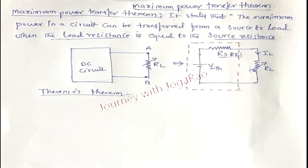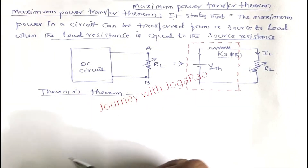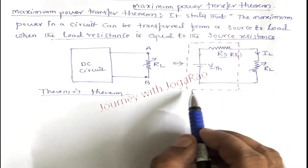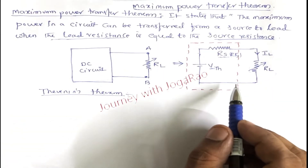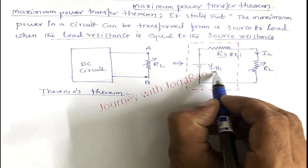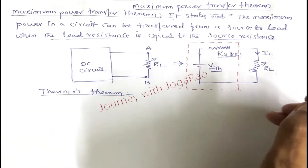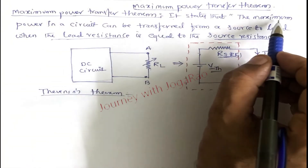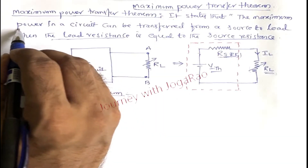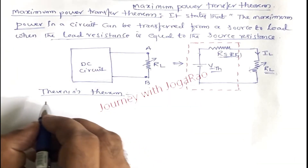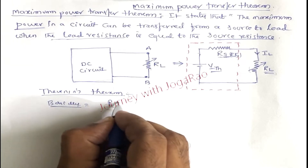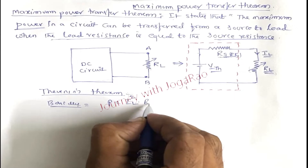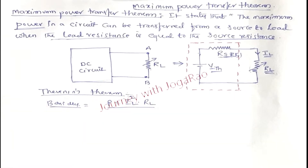The Thevenin circuit is the basis of the Maximum Power Transfer Theorem. Once you convert a circuit to its Thevenin equivalent — a single voltage source and resistance — this is the load resistance. The power is P = IL squared into RL.